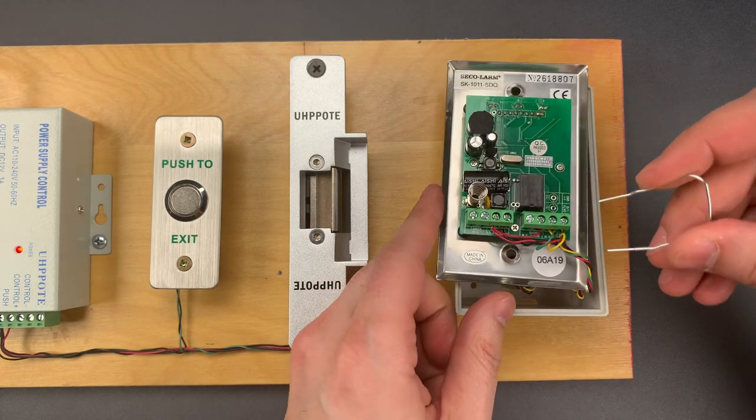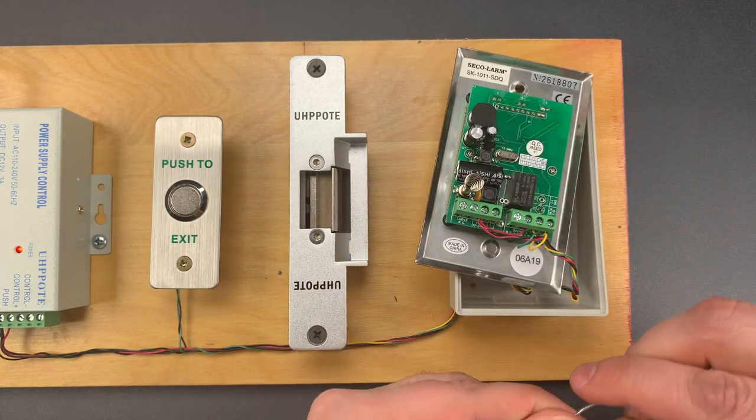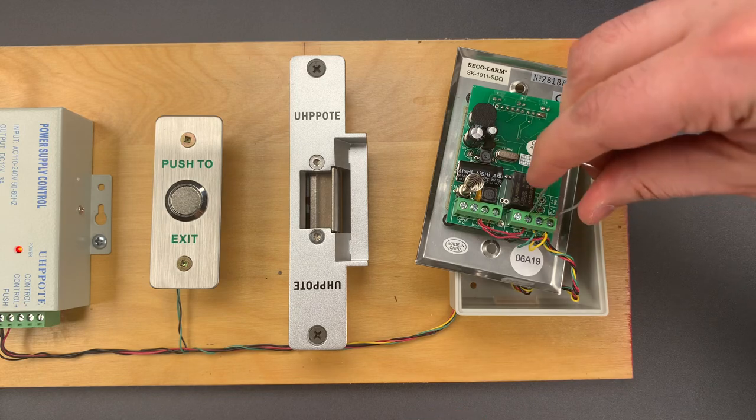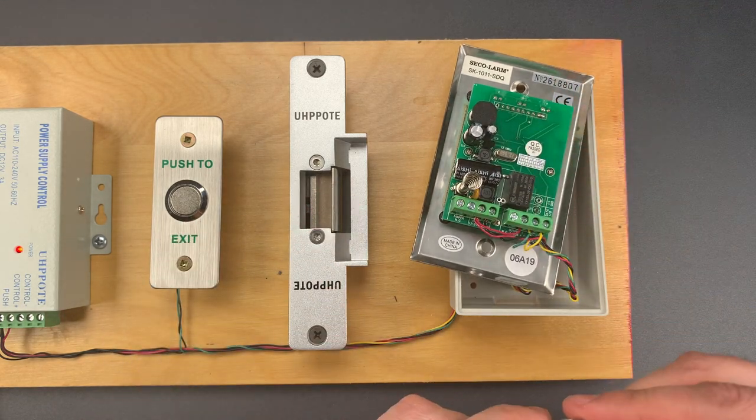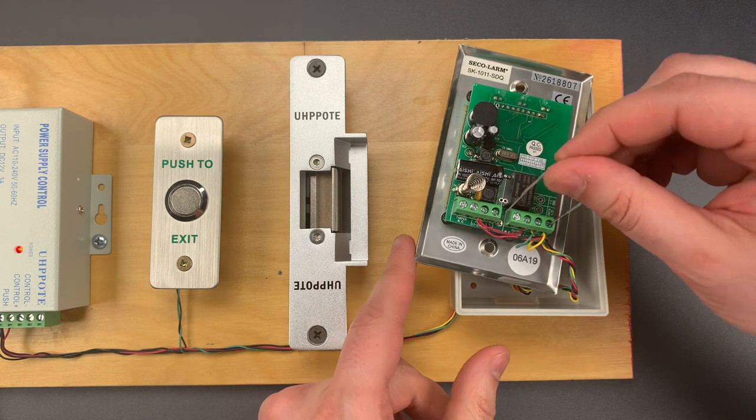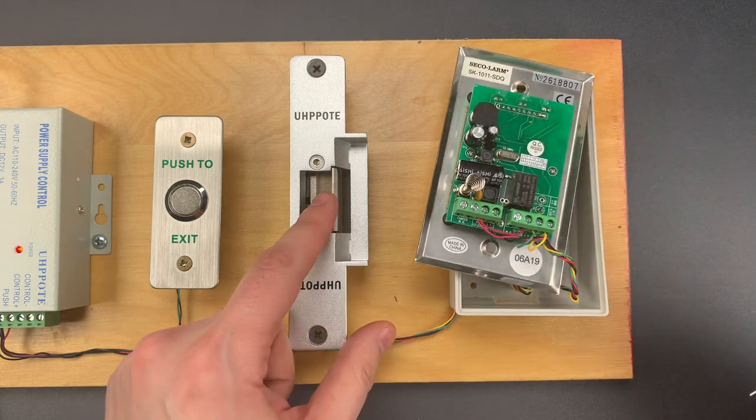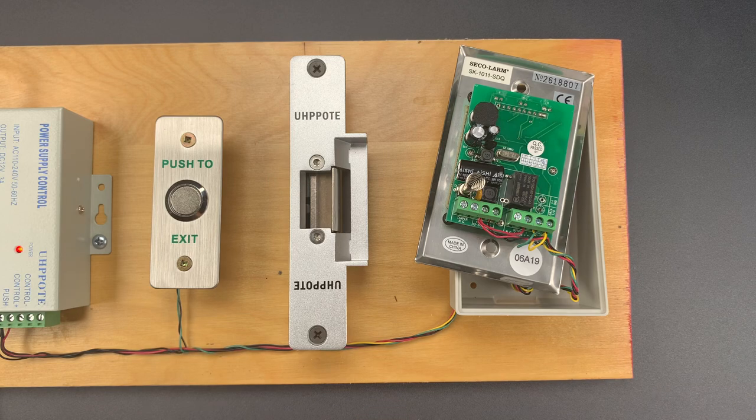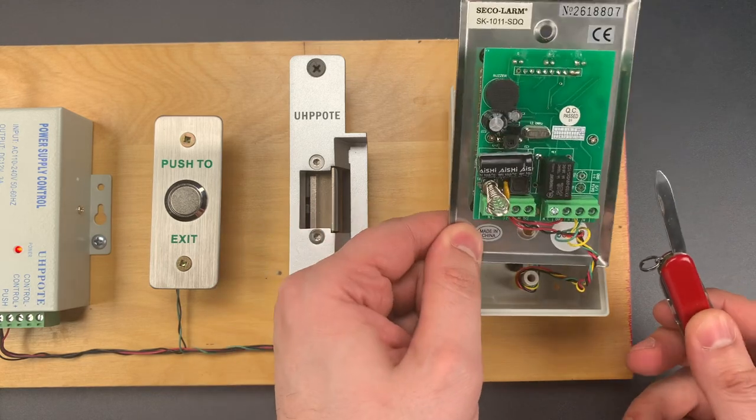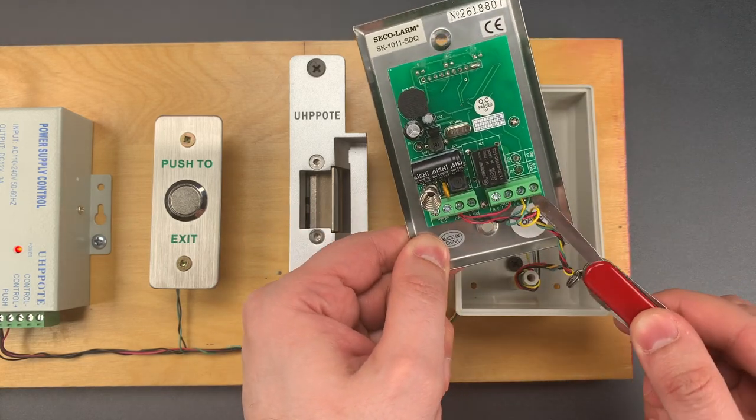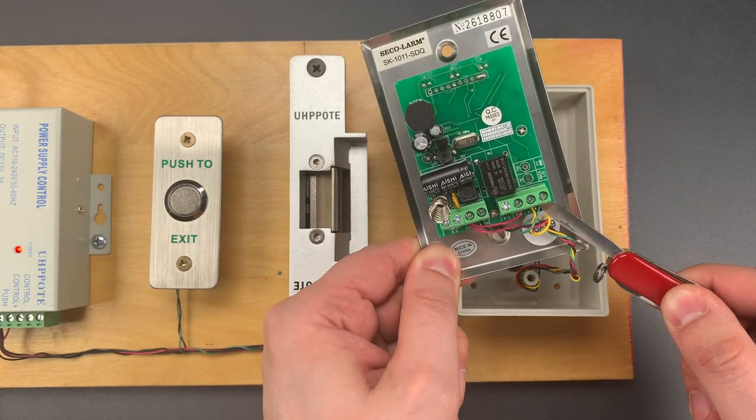That means I can bridge some contacts to open the strike plate. I can also trigger the egress button. And I can also do what you saw me do with the Swiss Army knife. And that is touch the egress contact point and bridge it to the cover plate.